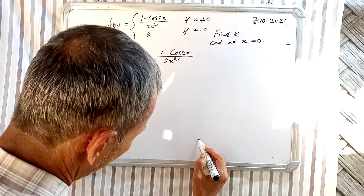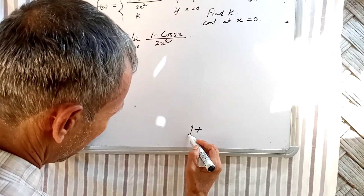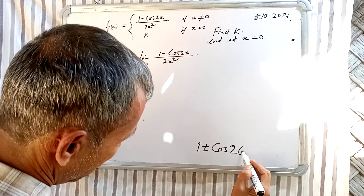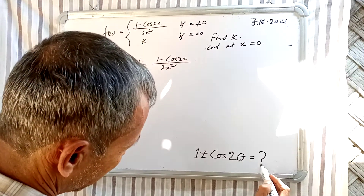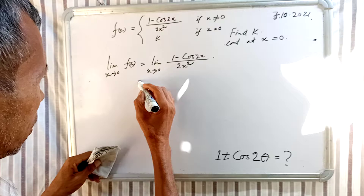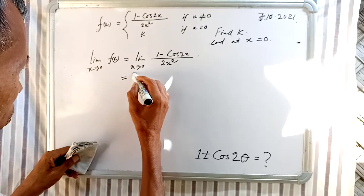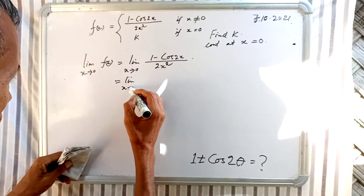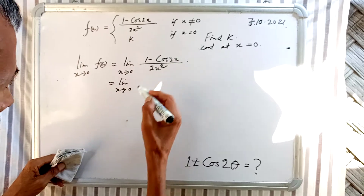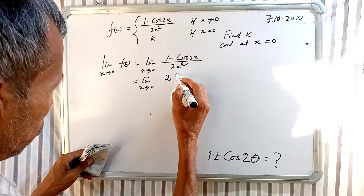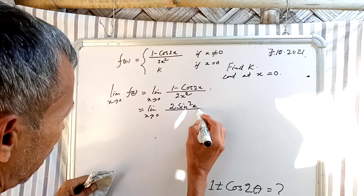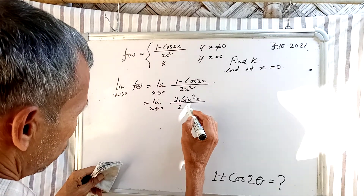Recall the identity: 1 - cos2θ = 2sin²θ. Applying this, the limit as x tends to 0 becomes: (2sin²x) / (2x²).